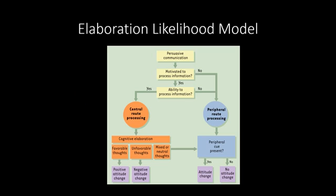Here is a summary of the elaboration likelihood model. For persuasive communication: if we are not motivated to process the information, it may take the peripheral route. If we are motivated, and also able to process the information, we get into cognitive elaborations — favorable thoughts leading to positive attitude change, unfavorable thoughts the opposite. How we think about and evaluate evidence is an important part of this, and peripheral cues are also potentially part of attitude change.